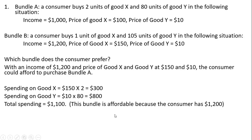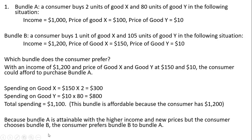This bundle is affordable because the consumer has $1,200 in this second situation. Because the consumer could afford to buy bundle A and did not, it means bundle B is preferred to bundle A. Because bundle A is attainable with the higher income and new prices, but the consumer chooses bundle B instead, the consumer prefers bundle B to bundle A.